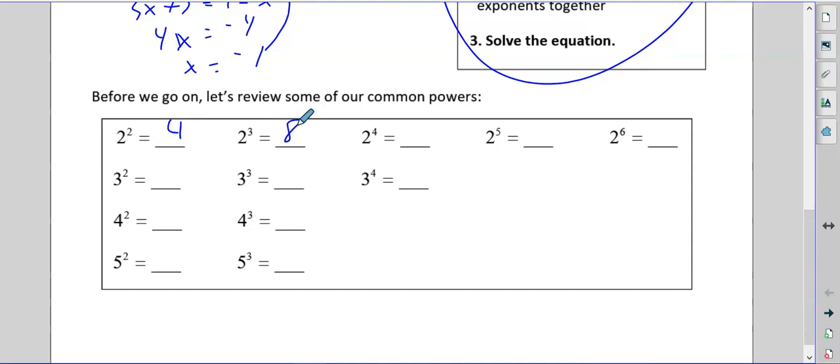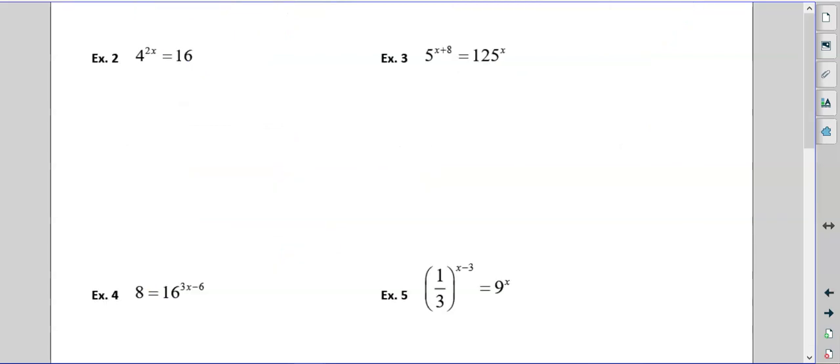2 squared is 4, then 8, then 16, then 32, and then 64. 3 squared is 9. Times 3 is 27. Times 3 again is 81. 4 squared is 16. Times 4 again is 64. 5 squared is 25. And then that's 125. You already have those in your cards.